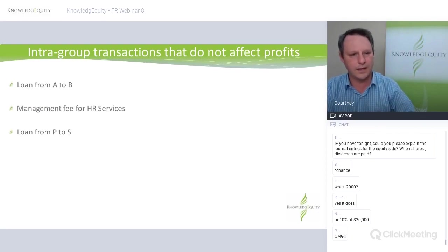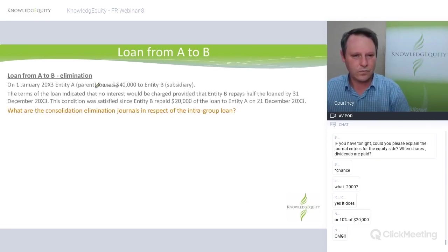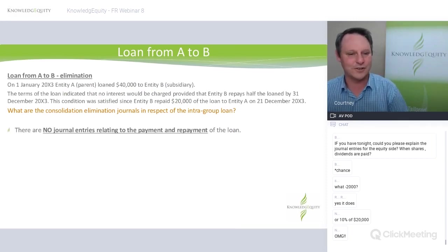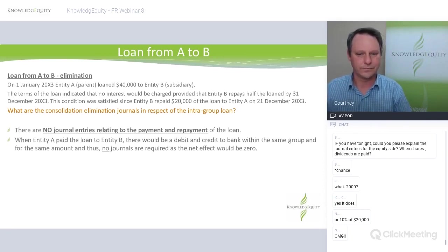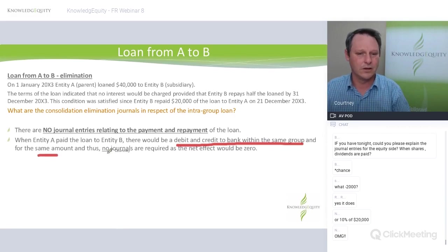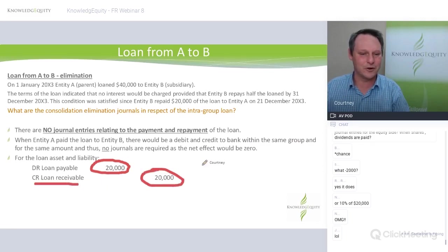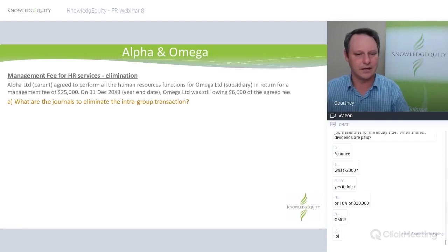Three simpler transactions: Loan from A to B — Entity A loaned $40,000 to B, no interest. Answer: no journal entries required. The debit and credit to bank within the same group for the same amount means the net effect is zero. For the loan asset and liability on the balance sheet: loan receivable is eliminated with a credit, loan payable is eliminated with a debit.